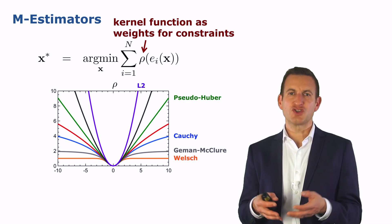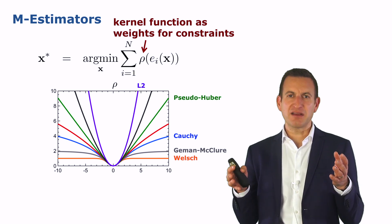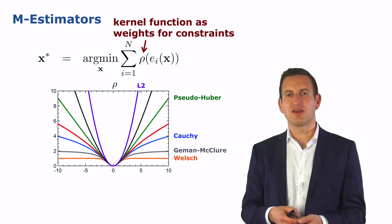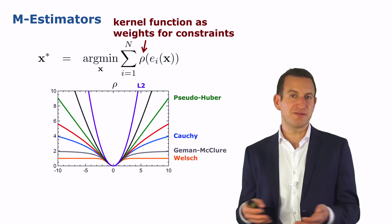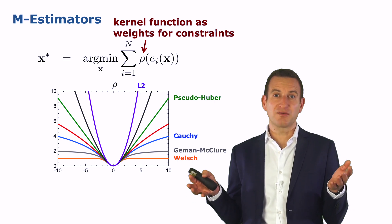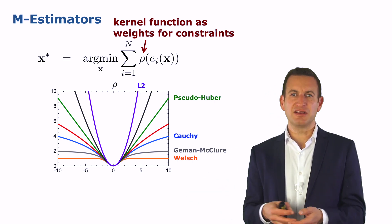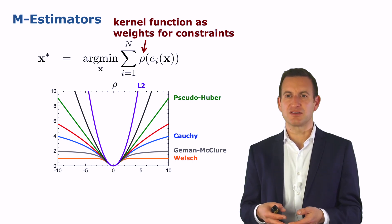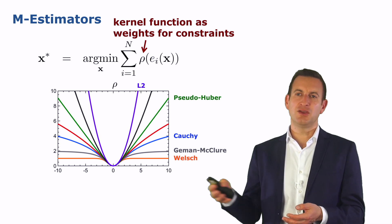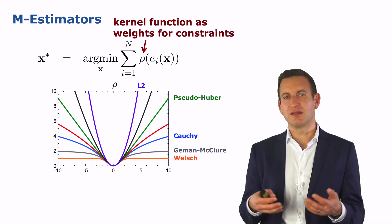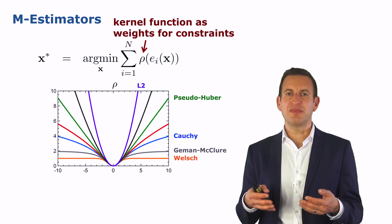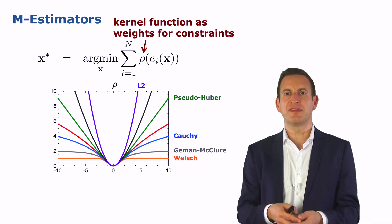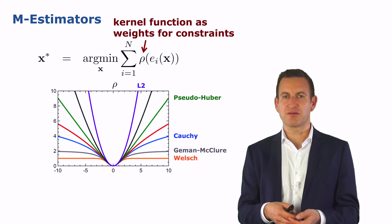It is basically a function which changes the shape from a quadratic function to a differently shaped function. So you can see here on that plot differently colored functions. And the purple one is actually the squared function, the parabola, the standard least square solution. And if we choose a differently shaped function, such as the Cauchy function shown in blue over here, or the Huber shown in green, we can see that the effect of constraints, which have a large error, that means they are further away from zero on the x-axis, is lower compared to the quadratic error function.